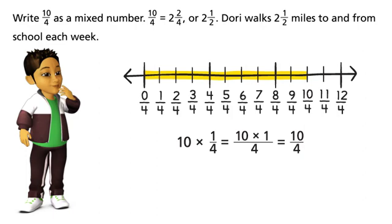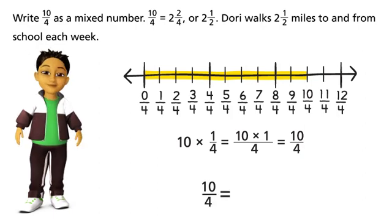Write ten-fourths as a mixed number. Ten-fourths equals two and two-fourths, or two and one-half. Dory walks two and one-half miles to and from school each week.